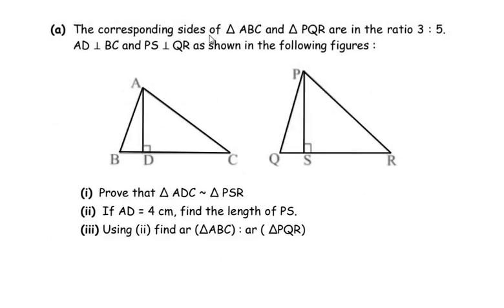The corresponding sides of triangle ABC and triangle PQR are in the ratio 3 is to 5. AD is perpendicular to BC and PS is perpendicular to QR as shown in the following figures. The first question is: prove that triangle ADC is similar to triangle PSR.